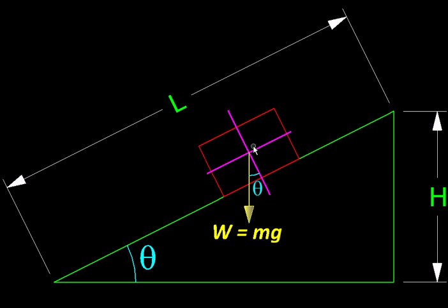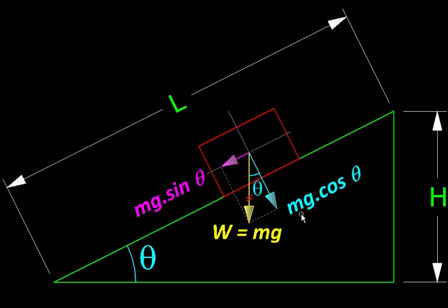So this is the coordinate frame that we have chosen. And the weight, w, is making an angle theta with this perpendicular to the plane. So let us resolve it. We will get two components. The component adjacent to theta will be the cos component, so mg cos theta. And the component opposite to theta will be mg sin theta.